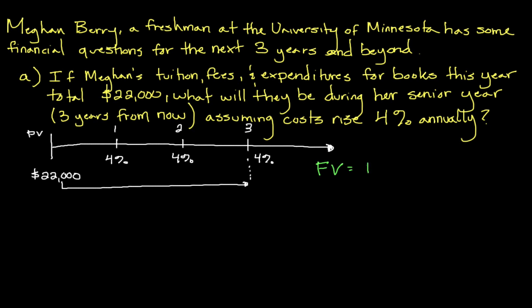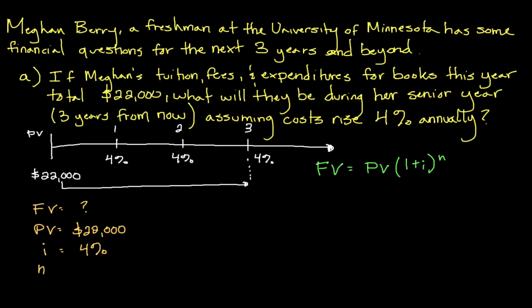Now that you know visually what we're trying to do — figure out what this $22,000 is going to cost in year three — we need the future value formula. The future value is the result of taking the present value and multiplying it by one plus little i to the nth power. Here, i represents the interest rate and n represents the number of periods, which could be months, days, or years. In order to stay organized, let's write out what we know. The future value is what we're trying to find. The present value is $22,000. The interest rate i is four percent, and n the number of periods is three.